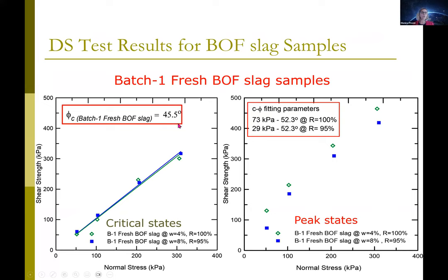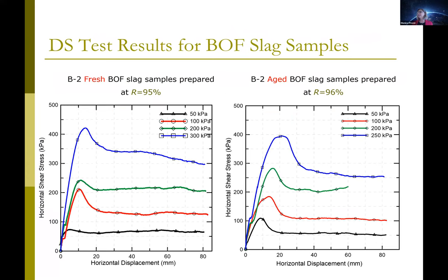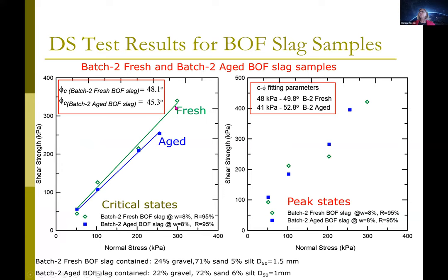We determined the critical state friction angle and the fitting parameters for the peak states. The critical state friction angle for the BOF slag was high — 45.5 degrees — showing excellent frictional properties. Comparing fresh versus aged material, the aged slag showed some reduction in shear stress, with a critical state friction angle of 48.1 degrees for fresh BOF slag and 45.3 degrees for aged slag.